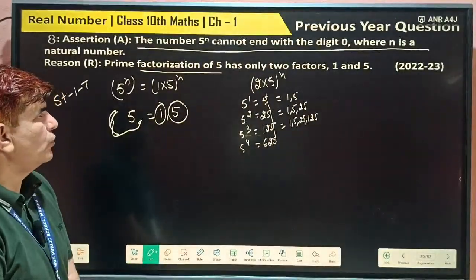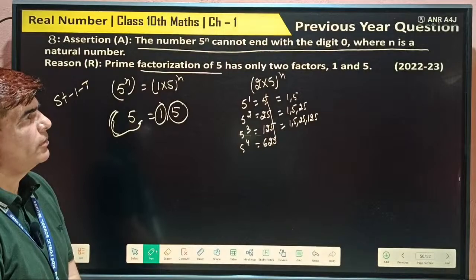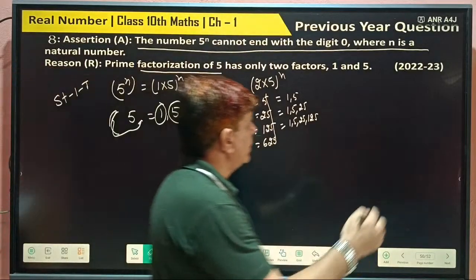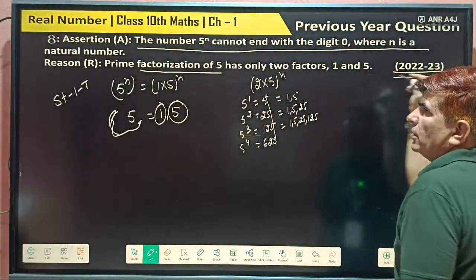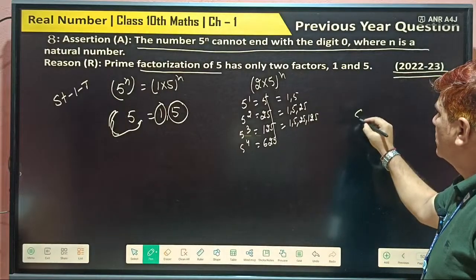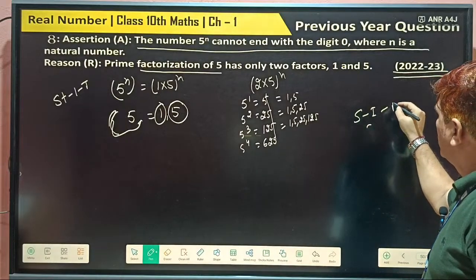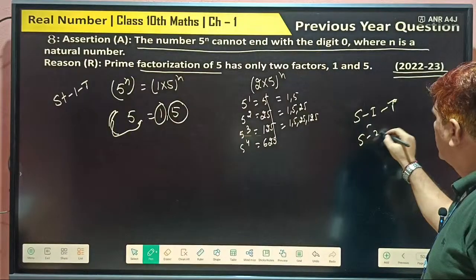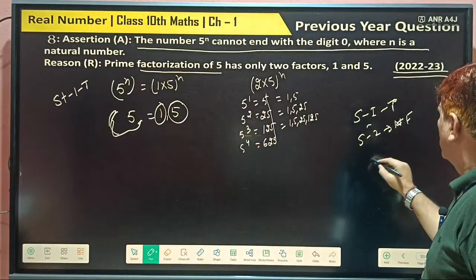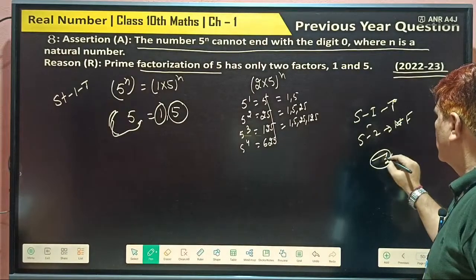Prime factorization of 5 has only 2 factors, 1 and 5. Got it. This came in the year 2022-23 in the board exam. So statement 1 is true, statement 2 is false. Not true, it's meaning false.